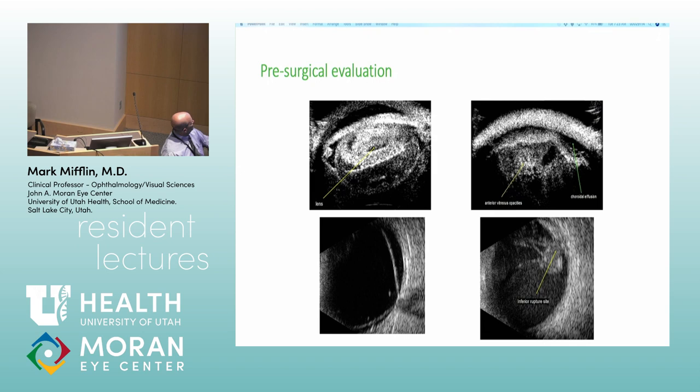Ultrasound is really useful if you have an opaque cornea. You can see how thick and nasty that cornea is — but also look for choroidal infusion, lenses right up in the front of the eye, or retinal detachment. Even if you do your own ultrasound, you'll usually find really bad stuff that may need to be addressed either during surgery or possibly as a contraindication.